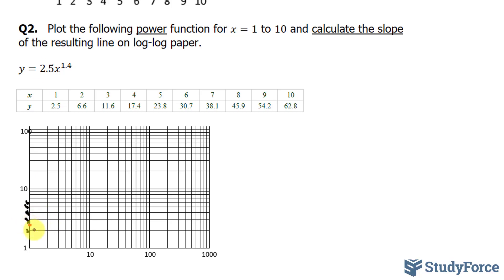My next point will be 2 and 6.6. So 2, this is my 2. And 6.6 will be in between these two lines. 3 and 11. That's 3 and 11 should be around here. Because this next line represents 20 on the y-axis.